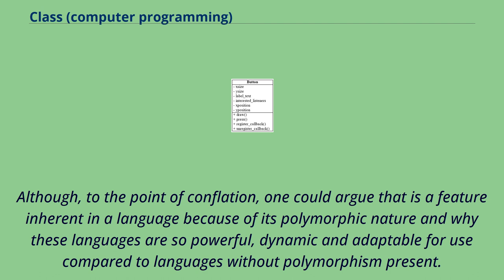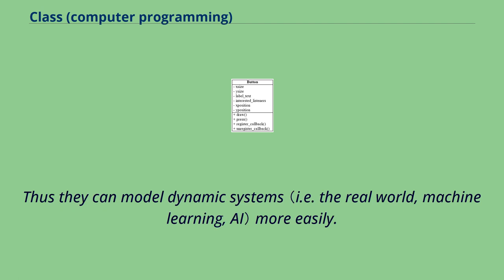One could argue that this conflation is a feature inherent in a language because of its polymorphic nature, and why these languages are so powerful, dynamic, and adaptable for use compared to languages without polymorphism present. Thus they can model dynamic systems more easily.